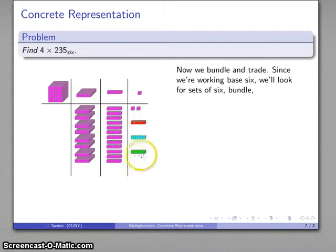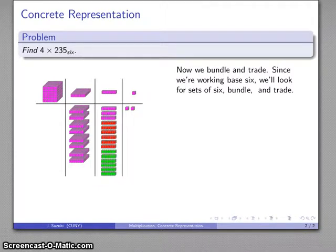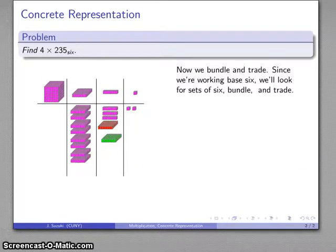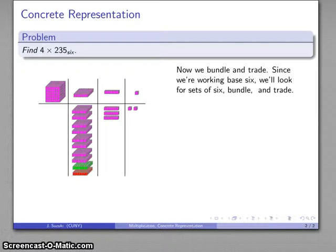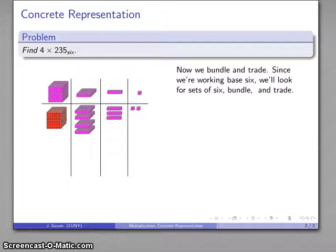I'll bundle and trade them. Trading, these are not where they should be, I'll move them over. I'm going to keep doing this. Bundle again, here's a group of 6, here's a group of 6. Package them up for shipment and ship them out. Bundle, package, and ship out. I can't do anything else at this point.